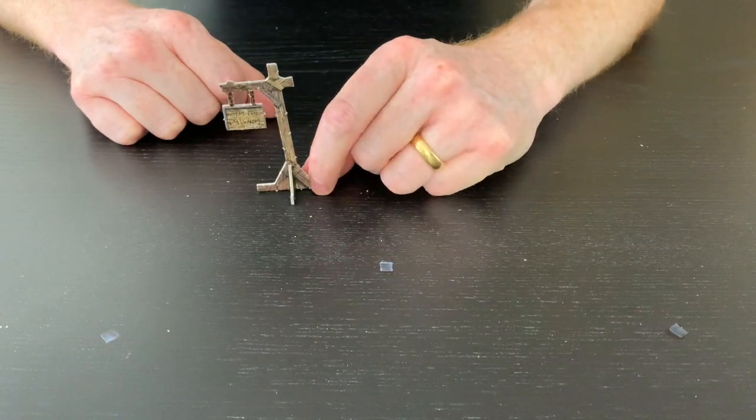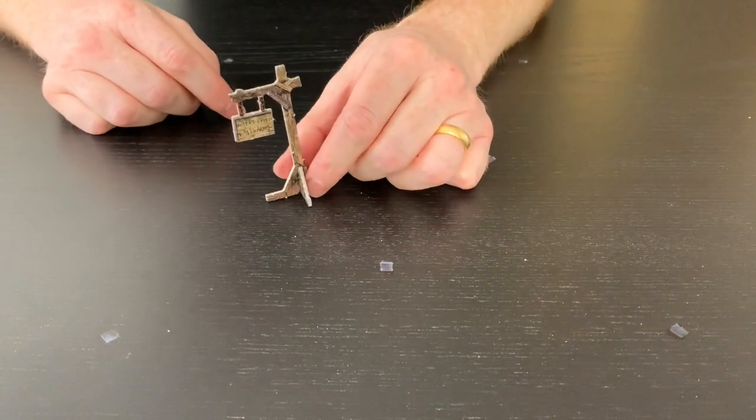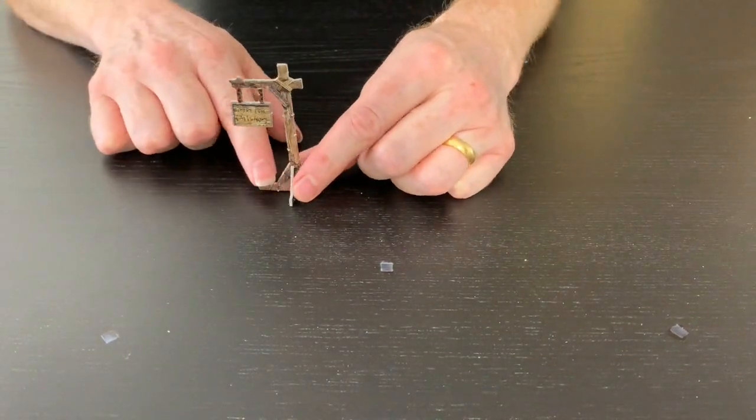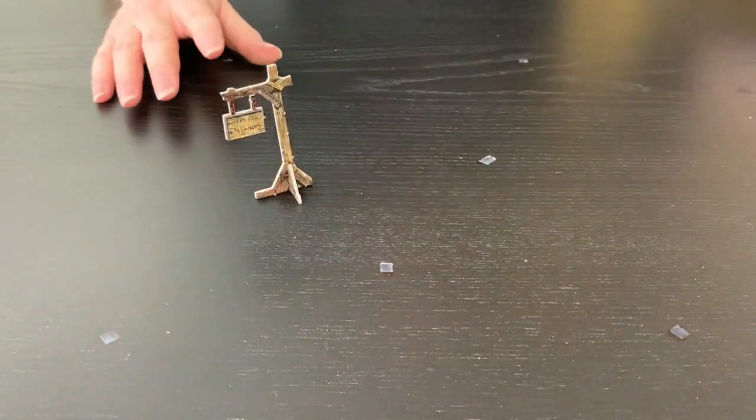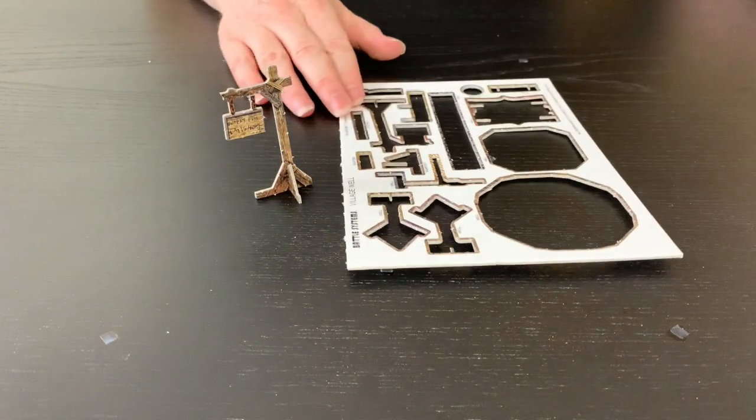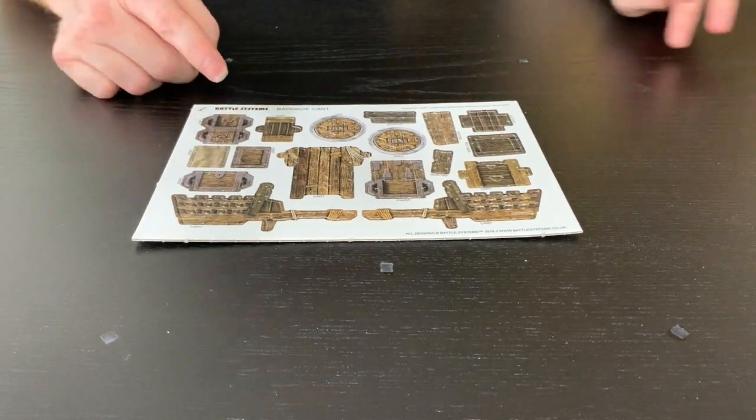So there you go, a sign and a well for your village well sheet. But we've also got, of course, this part of the sheet as well, which is your baggage cart and some cargo crates.